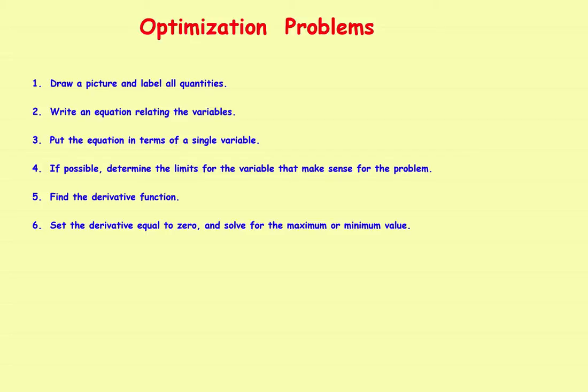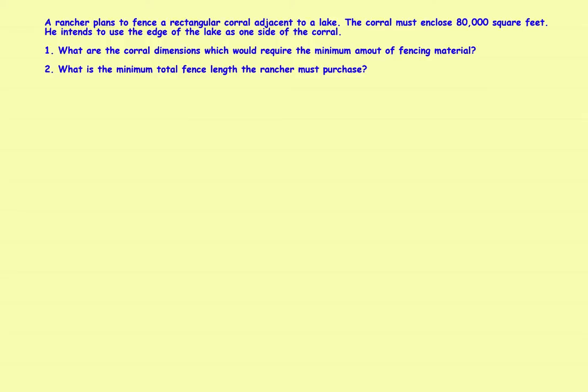The problem says: a rancher plans to fence a rectangular corral adjacent to a lake. The corral needs to enclose 80,000 square feet, and he wants to use the edge of the lake as one side of the corral. The questions are: what corral dimensions minimize the amount of fencing material, and what is that minimum amount of fencing?